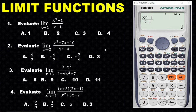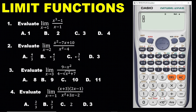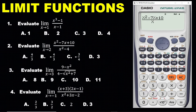The next question: evaluate the limit of x squared minus 7x plus 10, all over x squared minus 4, as x approaches 2. Enter the expression: click the fraction button, then on top enter x squared minus 7x plus 10. Go down and enter x squared minus 4 on the bottom.